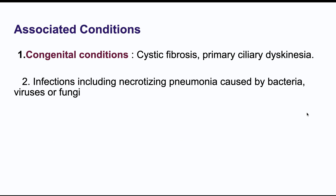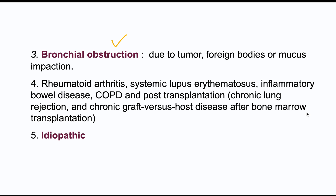The conditions associated with bronchiectasis include congenital conditions such as cystic fibrosis and primary ciliary dyskinesia. Certain infections such as necrotizing pneumonia caused by bacteria, viruses, or fungi can also cause it. Bronchial obstruction due to foreign body, tumor, or mucus impaction is another cause. Many cases are idiopathic. Other associated diseases include rheumatoid arthritis, SLE, inflammatory bowel disease, and post-transplantation states.